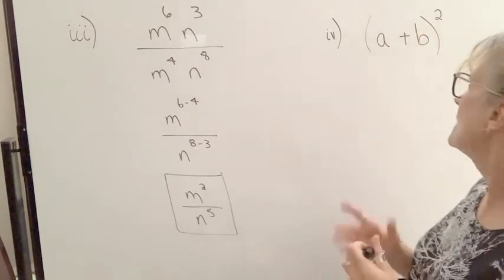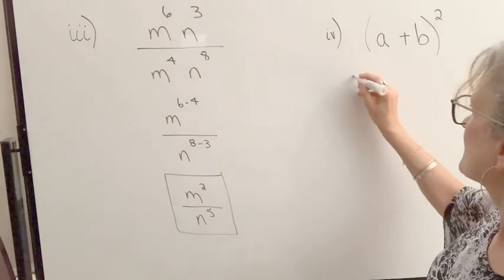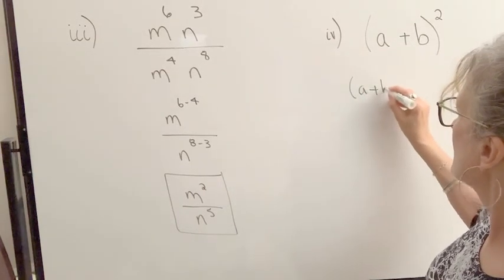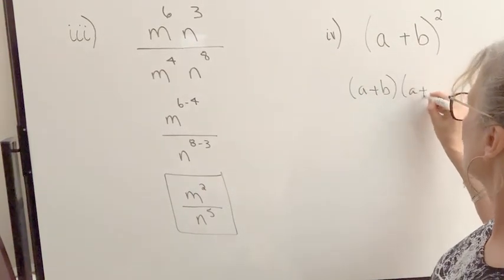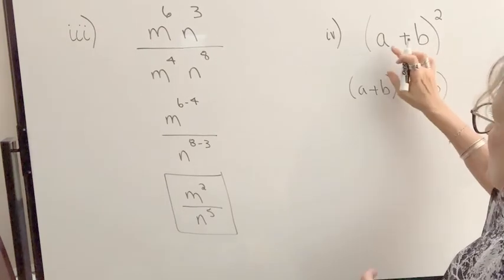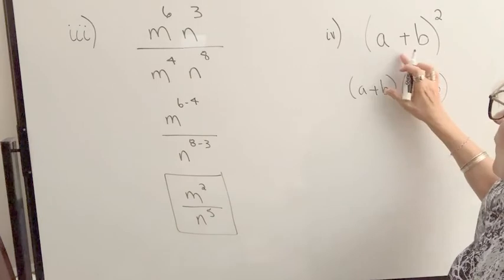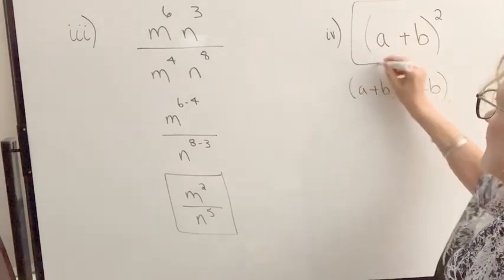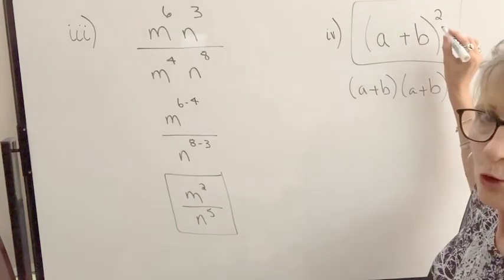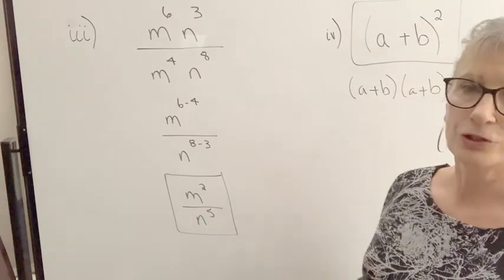Because there's an addition sign which turns these into terms, and we cannot apply power to terms like that. What can we do? We can leave it like that, or we can express it as a plus b times a plus b. That's what it means. It means this times itself two times. So we probably want to leave it in this form, but remember, don't apply that power to your terms.